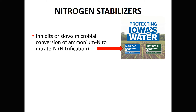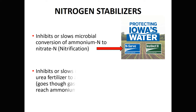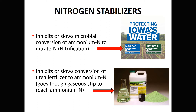Some of the nitrogen stabilizers include N-Serve and Instinct, both containing nitrapyrin — these are the most common nitrification inhibitors, both by Dow AgroSciences. The most common volatilization inhibitor is Agrotain, trade name, with the common name NBPT. This past year, many generic products containing NBPT have been released in the marketplace, but Agrotain is probably the one you hear about most and has been in the marketplace the longest.